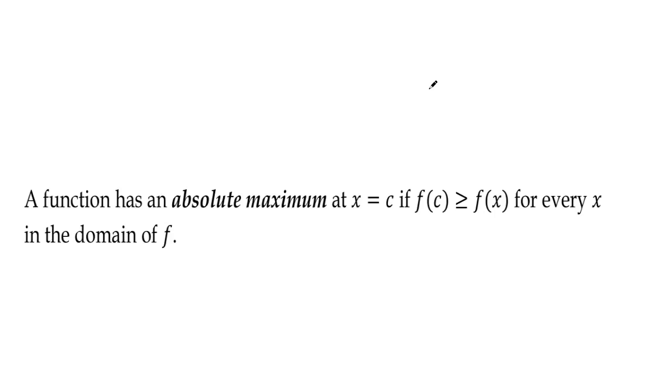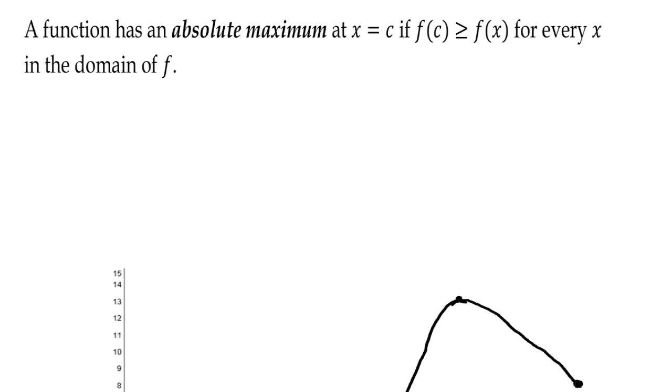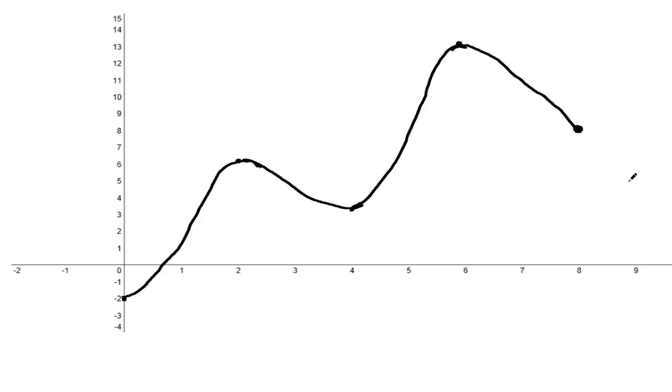A function has an absolute maximum at x equals c if f(c) is greater than or equal to f(x) for every x in the domain of f. Let's take a look at this graph here. Notice that at x equals 6 the graph is the highest and it has a y value of 13. So f has an absolute maximum at x equals 6 and the absolute maximum value is 13.